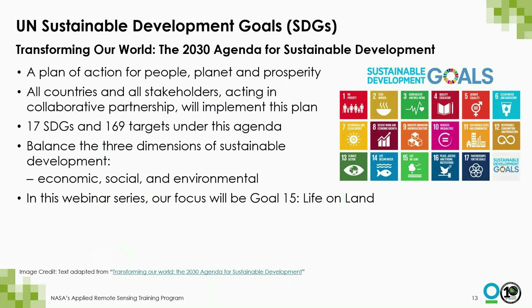To provide some background: the SDGs were developed to set the world on a path towards sustainable development through the adoption of the 2030 agenda. The goals provide a framework for the people, the planet, and prosperity, to be implemented across countries with stakeholders acting in a collaborative partnership. There are 17 SDGs and 169 targets. Targets are aspirational and global, with each government setting its own national targets guided by the global level of ambition but with flexibility for national circumstances. Within each target, there are indicators and monitoring frameworks.